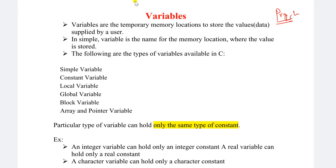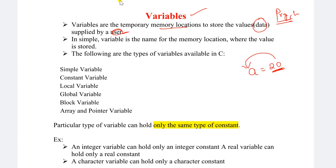Now let us discuss variables in detail. What do you mean by a variable? Variables are the temporary memory locations used to store values — that means data — in order to store data supplied by the user. For example, if I pass the value 20, that value needs to be stored in a variable called A. So A is nothing but a temporary memory location.